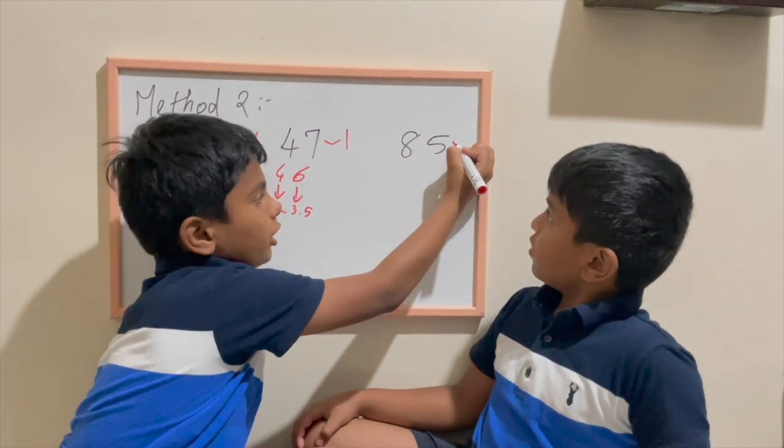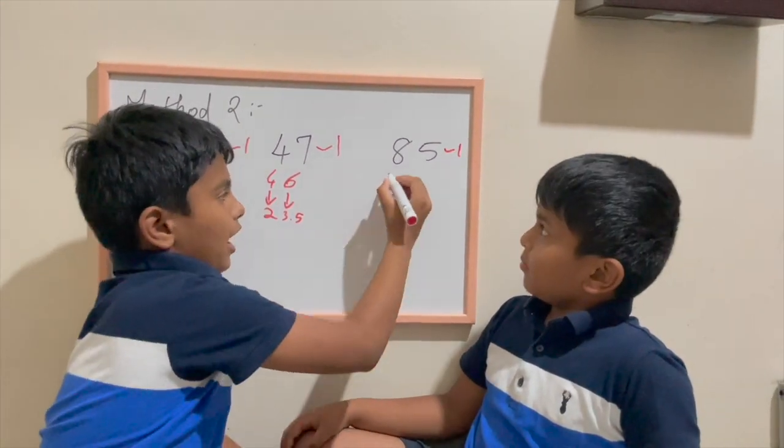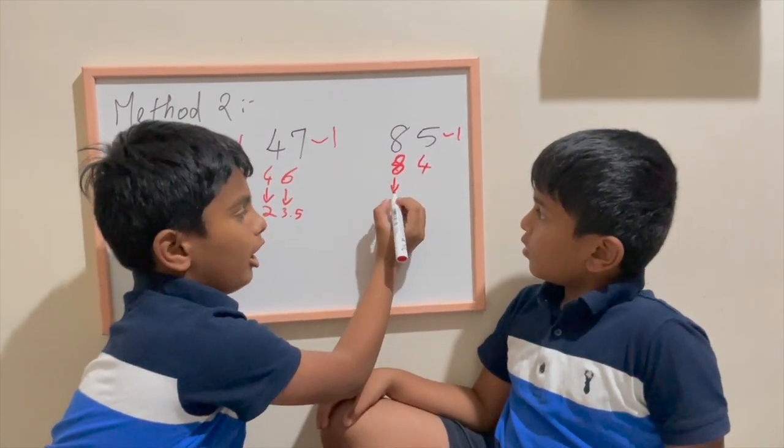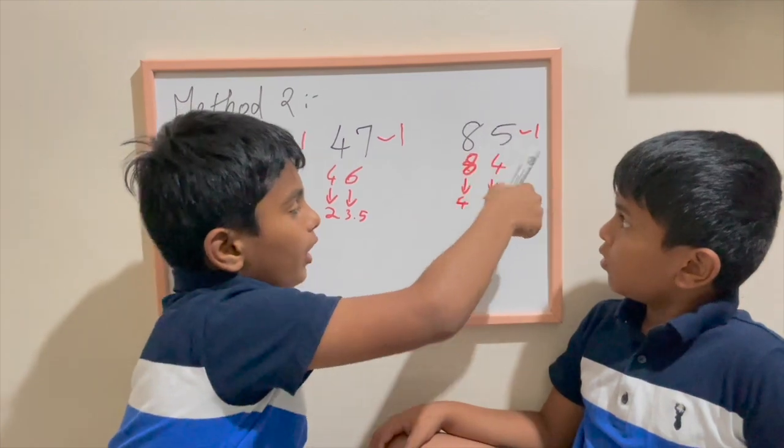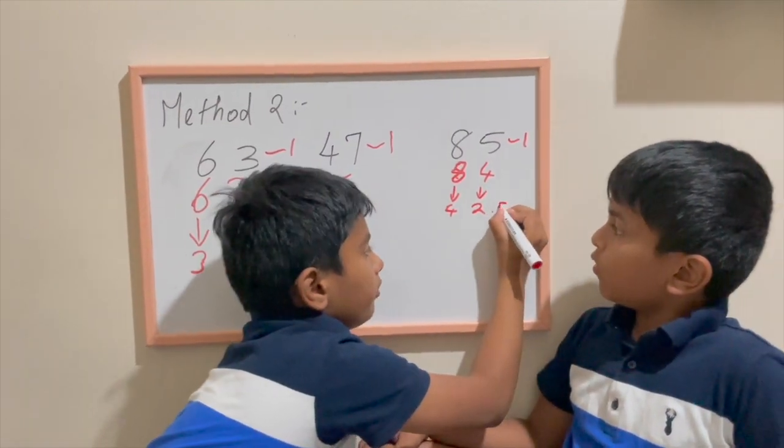It would carry the 1, so 0.5, 42.5. Correct. So same trick with 47. 85 minus 1, 84. 8 half 4, 4 half 2. Now it's an odd number, so 0.5.